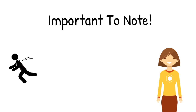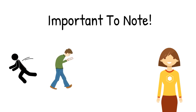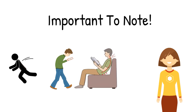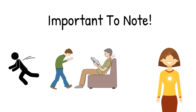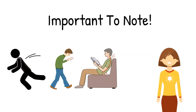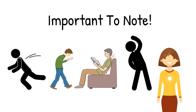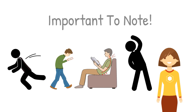Children with low muscle tone also often present as lethargic, prop their bodies when sitting, slouch in their chairs, have poor physical endurance, and movements can be clumsy. These children further appear to have greater flexibility in their joints.